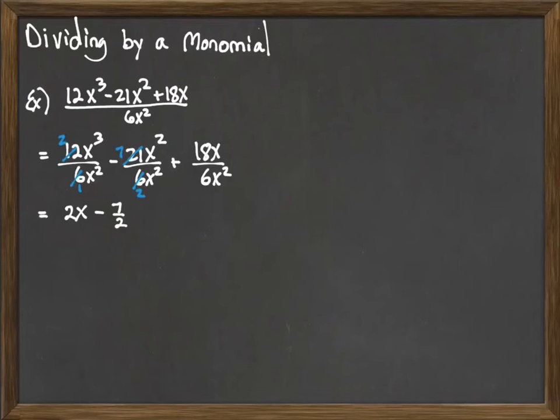Finally we have 18x over 6x². We can divide the numbers, 6 and 18. Take 6 out of both, leaving 3 in the top. For the variables, that's x¹ over x². We subtract the exponents, 1 minus 2, and get 3x⁻¹.